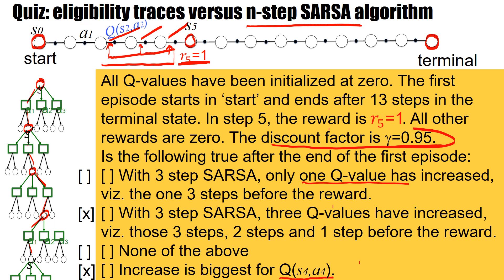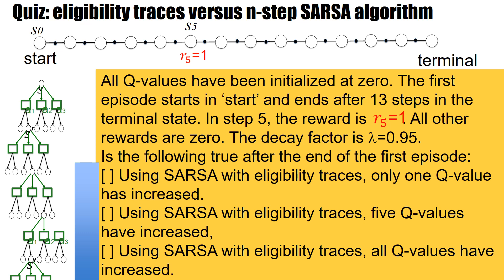Now let's redo the same for an algorithm with eligibility traces. Same setting: all Q-values initialized at 0, the first episode starts and ends after 13 steps in the terminal state. The only reward is at step 5, R5 equals 1. The decay factor of the eligibility trace is 0.95. Is the following true after the end of the first episode? Using SARSA with eligibility traces: only one Q-value has increased, or five Q-values have increased.